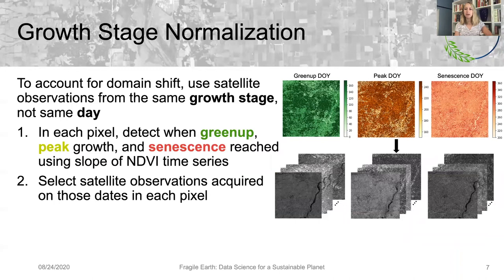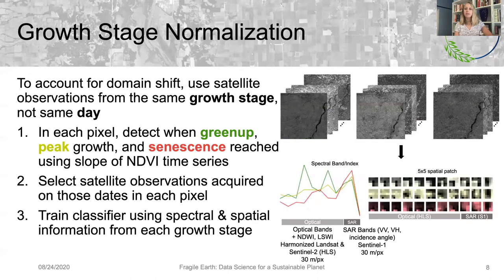Next, we select the satellite observations that were acquired on those dates in each pixel, so the value in each pixel in these images is from the satellite observations corresponding to the detected growth stage day. From those satellite observations, we extract the spectral and spatial examples that will be used as the inputs to our model. In both types of input, we use the optical bands from the Harmonized Landsat and Sentinel-2, or HLS dataset, as well as two spectral indices, NDVI and LSWI, that we compute from those bands. We also use three synthetic aperture radar or SAR inputs from the Sentinel-1 satellites, and all of these observations have 30 meters per pixel spatial resolution.